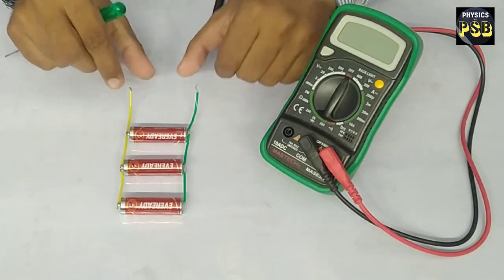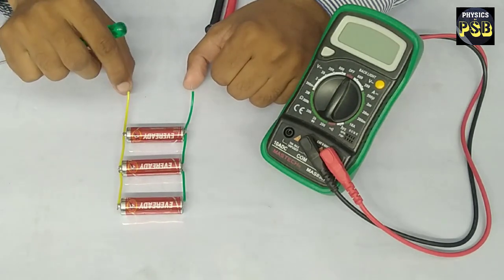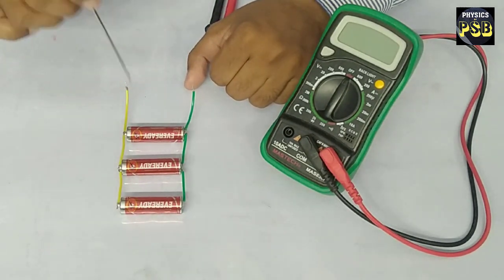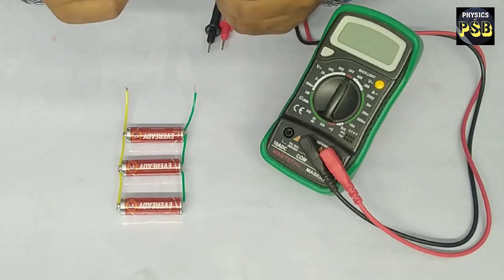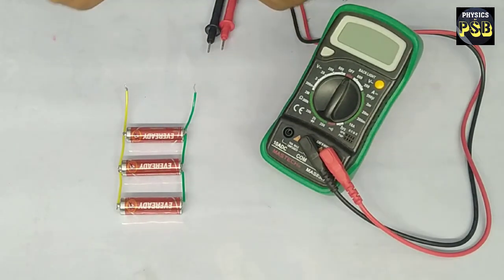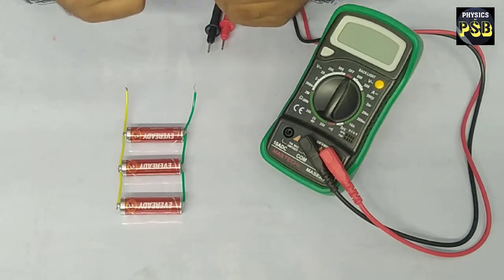Here this free terminal acts as the positive terminal of the battery, and this acts as the negative terminal of the battery. When cells are combined it forms a battery, you remember that.